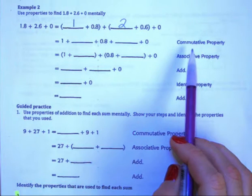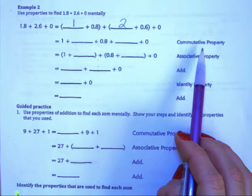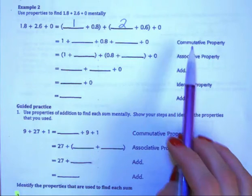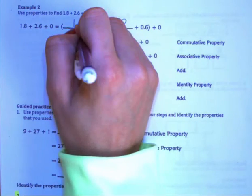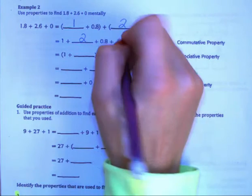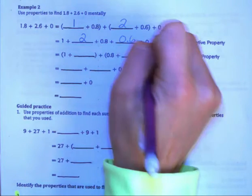So our first step is to use the commutative property. So we are going to rewrite that as 1 plus 2. So we are going to put our whole numbers together. Then we can put our decimals together. So 8 tenths plus 6 tenths plus 0.